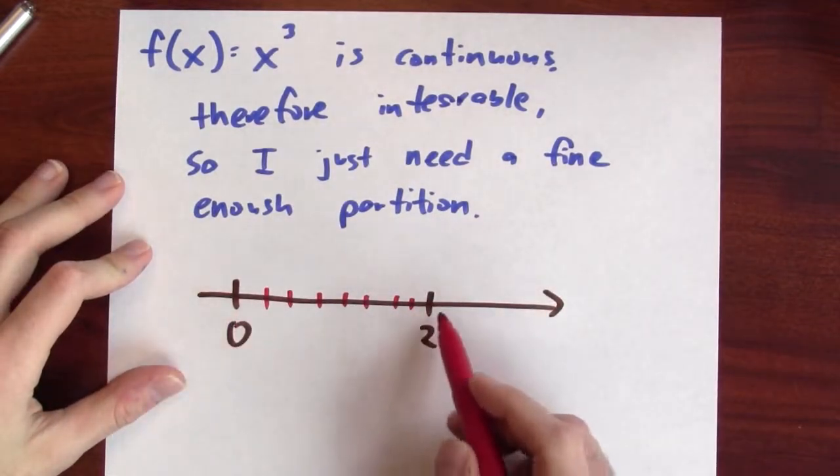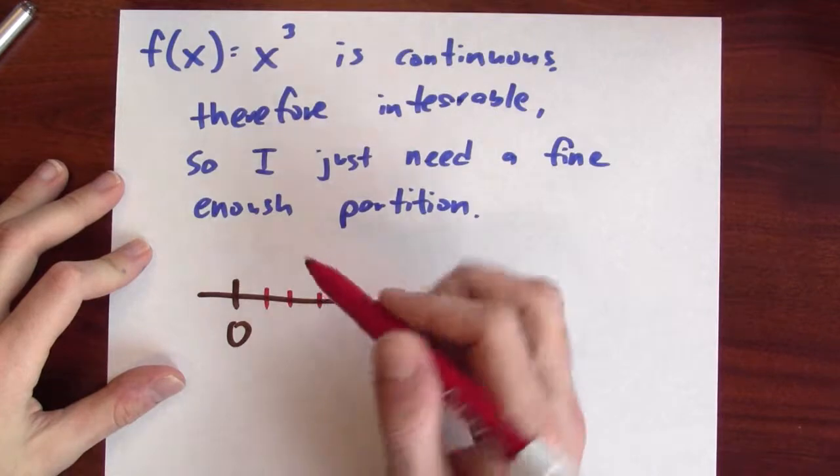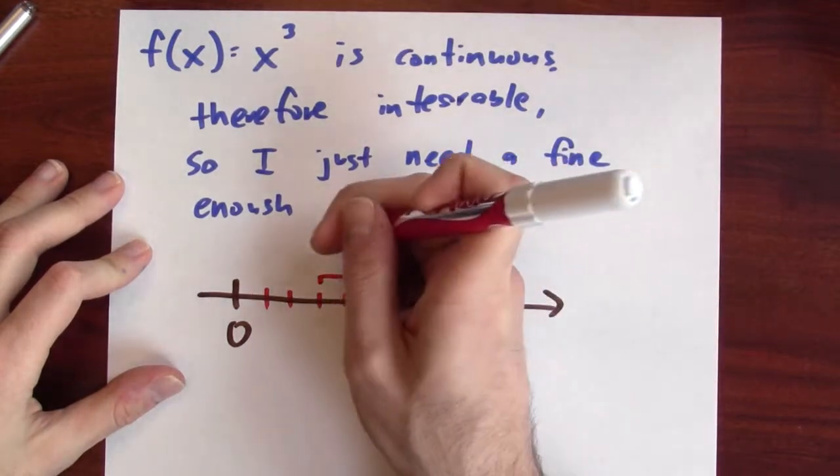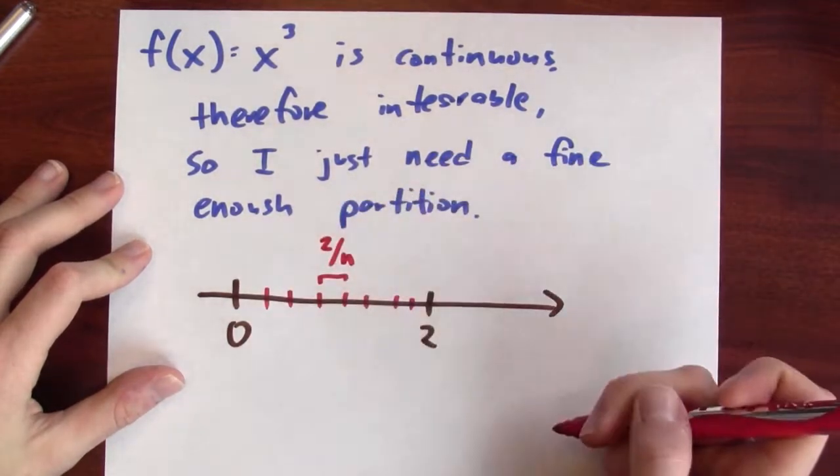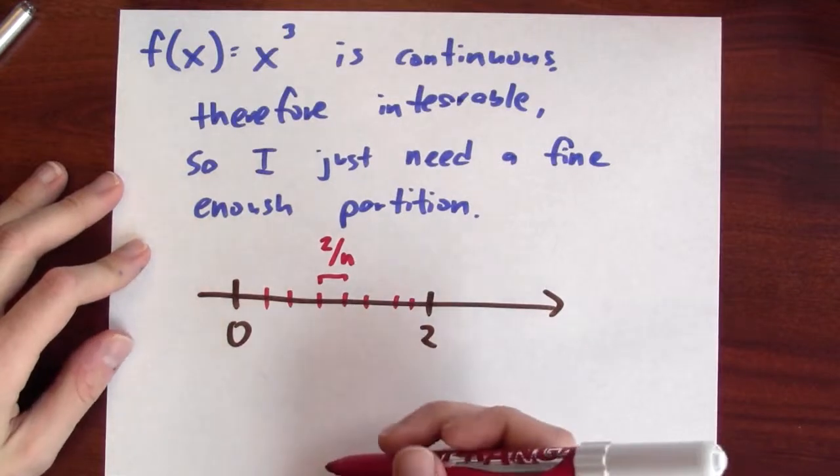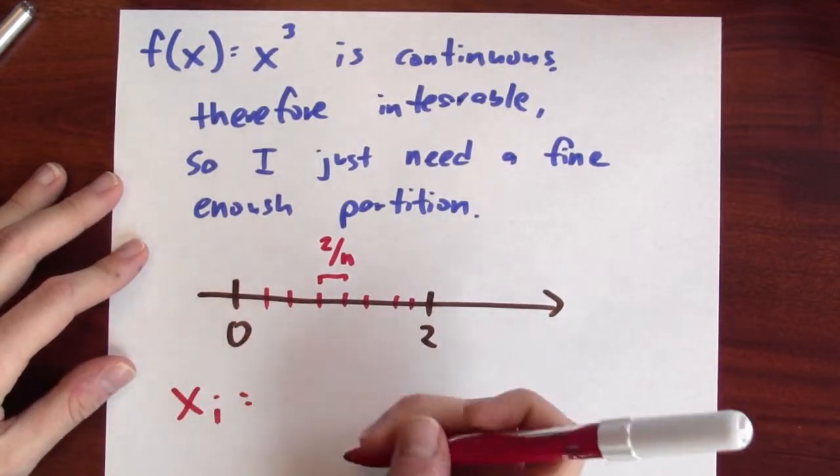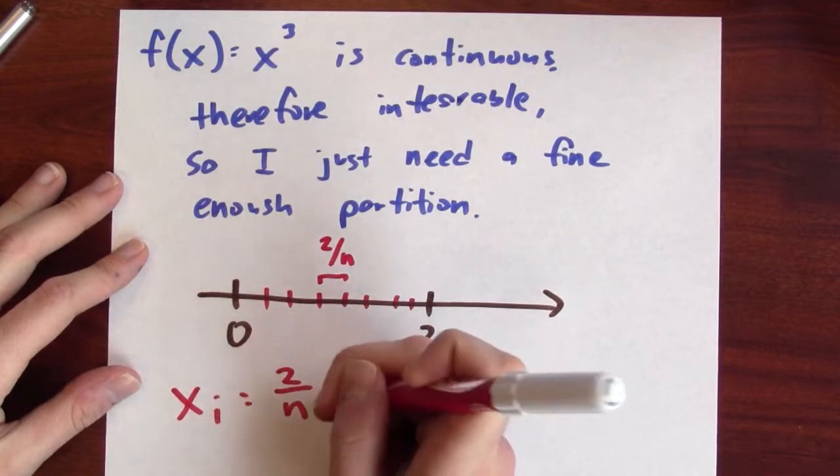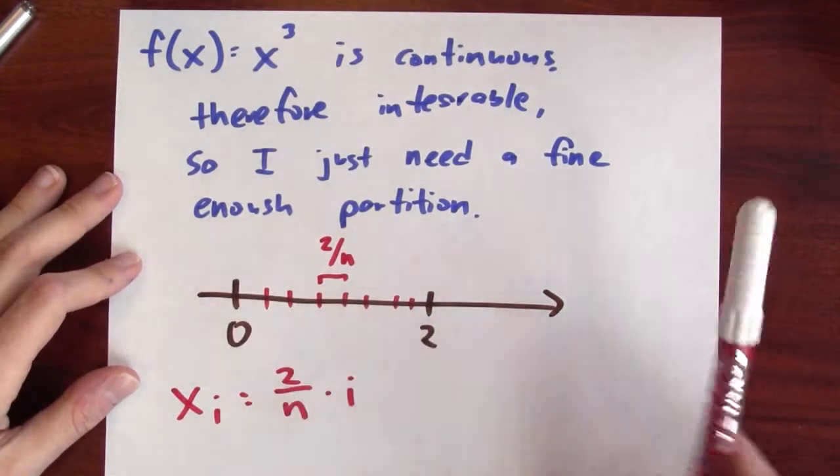Now, the length of this whole interval is two units long, so each of these pieces should have a width of 2 over n. And that lets me write down the formula. The cut point, x sub i, will be 2 over n times i. And that works out great.